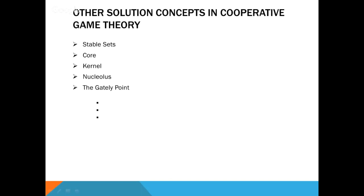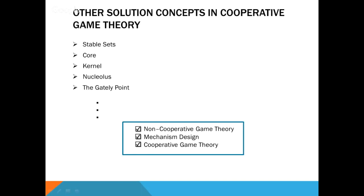There are other solution concepts in cooperative game theory, such as stable sets, core, kernel, nucleolus, and the Gately point. All these solution concepts satisfy specific properties and are used in cooperative game theory. This concludes the discussion of non-cooperative game theory, mechanism design, and cooperative game theory.